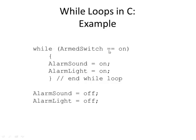So if you get into the loop and the armed switch is on, it falls into the loop, does the statements, comes back up and checks: is the armed switch still on? If it is, it repeats over and over. When the owner comes in, puts their key in, and turns off the armed switch, it breaks out of the loop and executes the statements after the loop, which turn off the sound and the light. We use indentation as a visual aid, but C uses the curly braces to know the boundaries of the loop. If the armed switch was already off when we reached this line, we would never go into the loop at all.